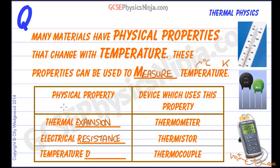The physical property that a thermocouple uses is temperature difference — the temperature difference between the two metal probes. It's important to appreciate that many materials have physical properties that change with temperature, and we can use that to help us measure the temperature of materials.